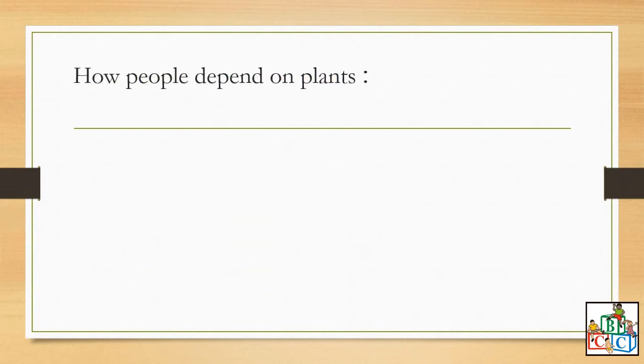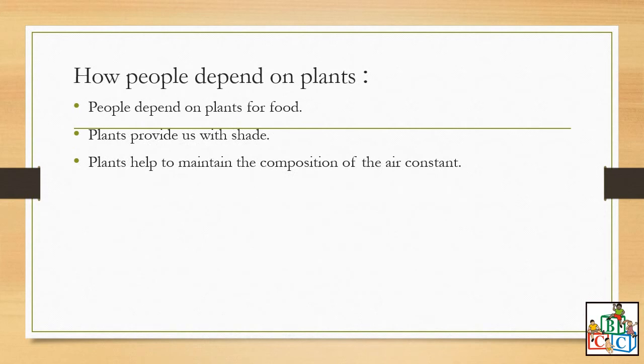State ways in which we depend on plants. So how do people depend on plants? People depend on plants for food. Obviously, for food, one of the main reasons. You are going to get fresh food from plants. Also, plants are going to provide us with shade. Plants also help to maintain the composition of the air constant. As you know, we need oxygen to survive. So how are we going to get oxygen? It's from the plants. So that is how we, people, depend on plants to get oxygen, clean air, to breathe.